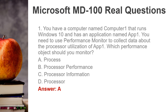Question 1. You have a computer named Computer 1 that runs Windows 10 and has an application named App1. You need to use Performance Monitor to collect data about the processor utilization of App1. Which performance object should you monitor? A. Process. B. Processor Performance. C. Processor Information. D. Processor.